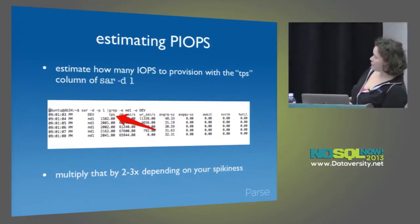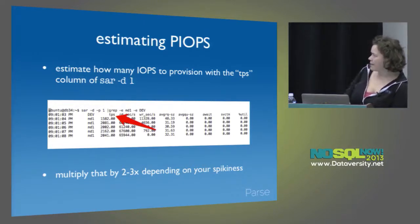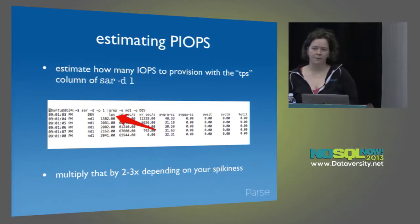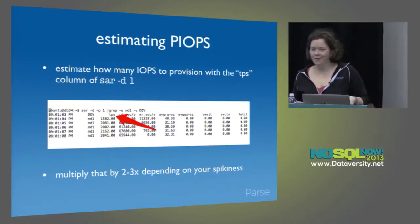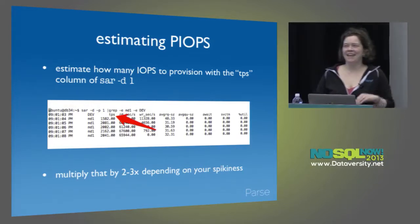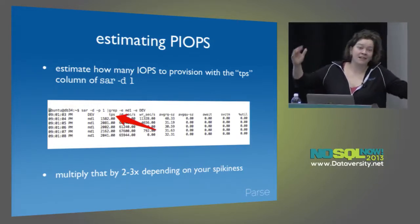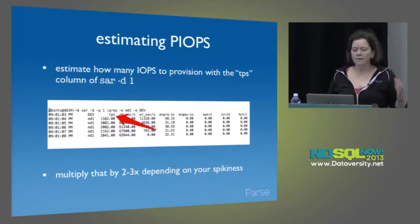How do you know how many provisioned IOPS to provision? The best way I've found: use iostat -d 1, look at the TPS column, and provision about two or three times as much as that. If you're wondering what it looks like if you run out of provisioned IOPS — it's bad. Your disks just kind of stop for a minute. Give yourself some headroom. If you have a really spiky workload, maybe multiply by three or four.